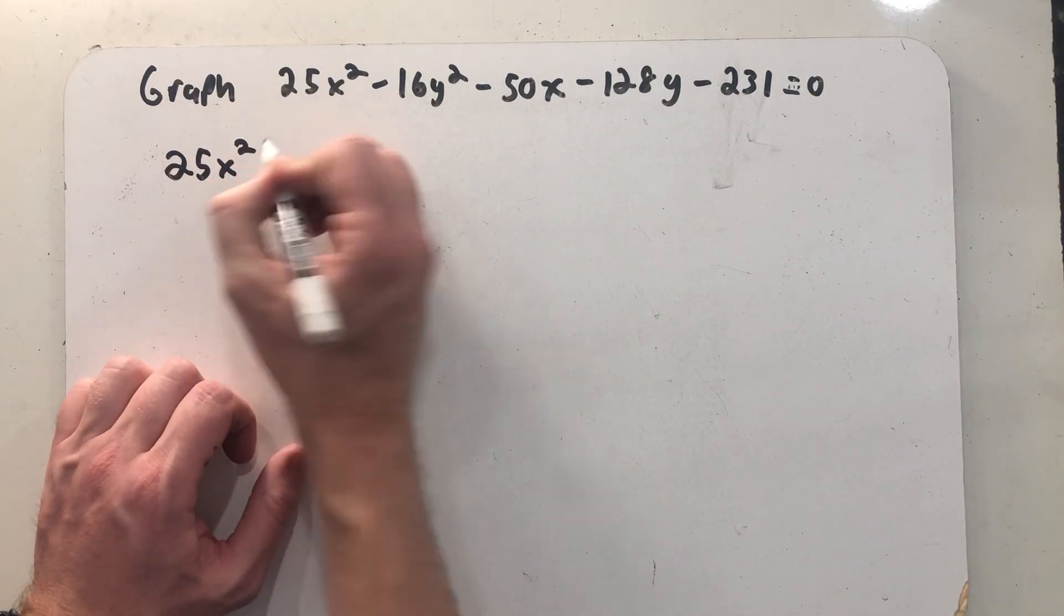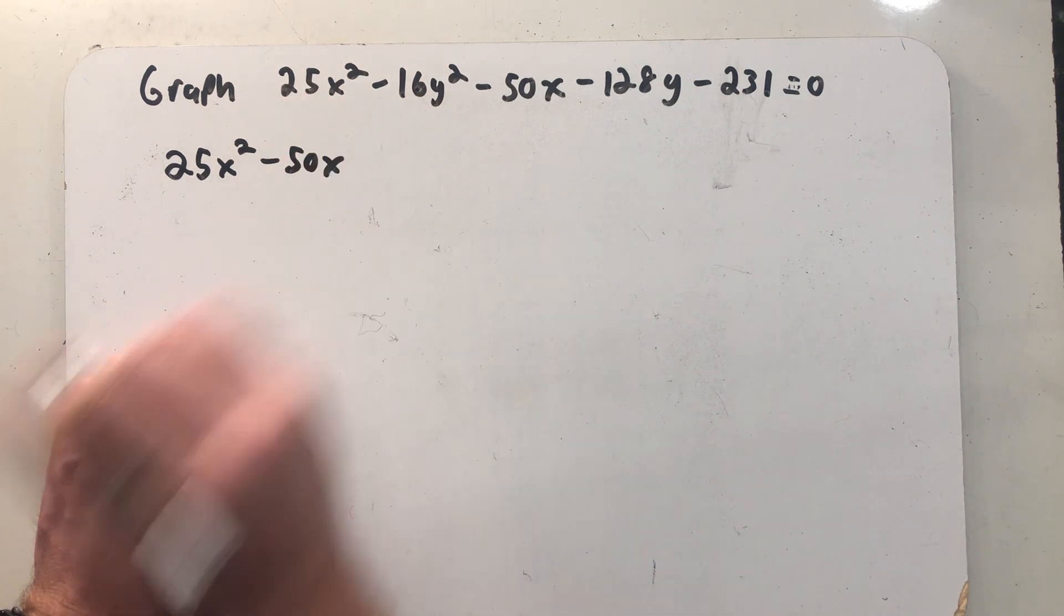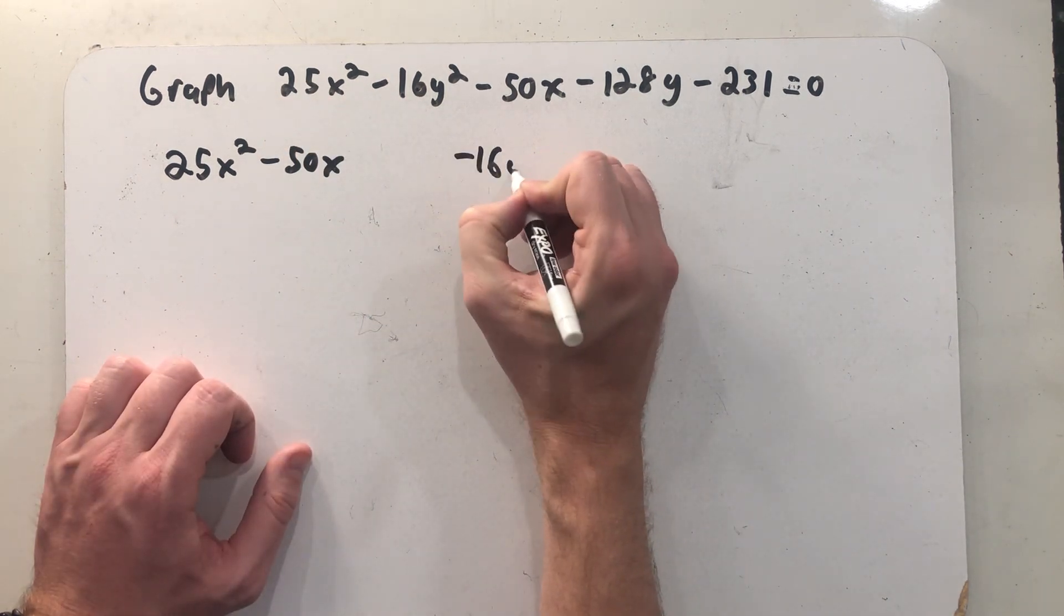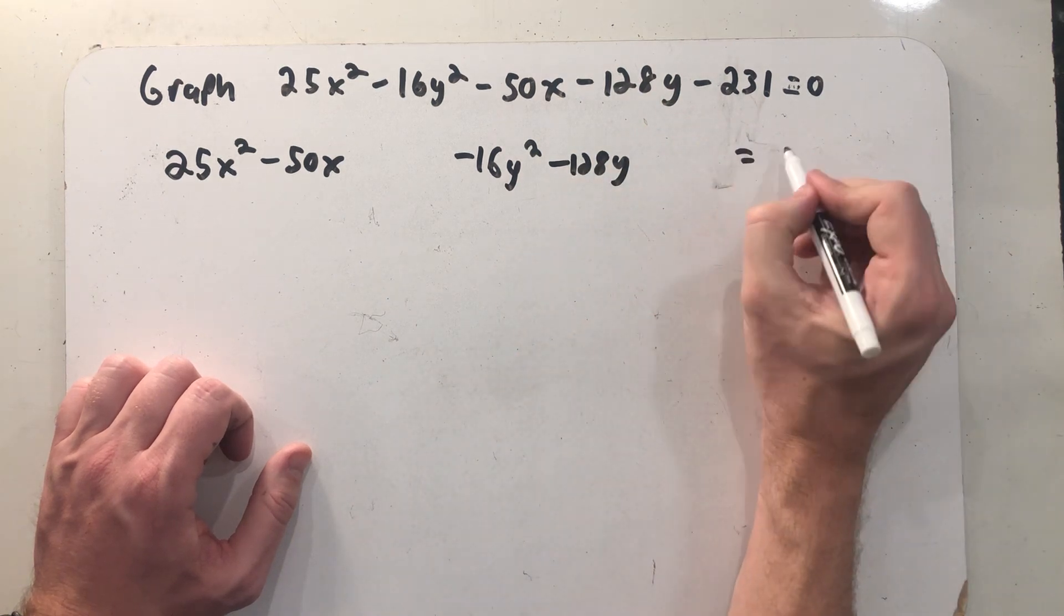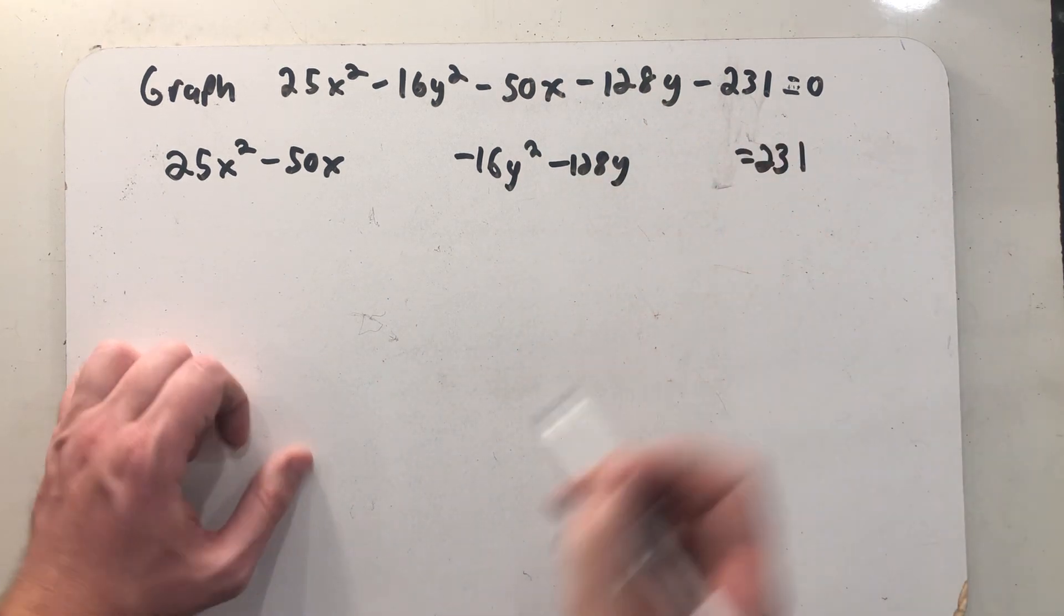So I'm going to try to rewrite it in one of its standard forms by completing the square a couple times. I'm going to get the x's and y's together and send that 231 to the other side.